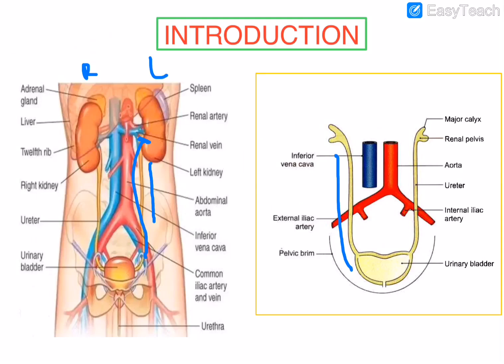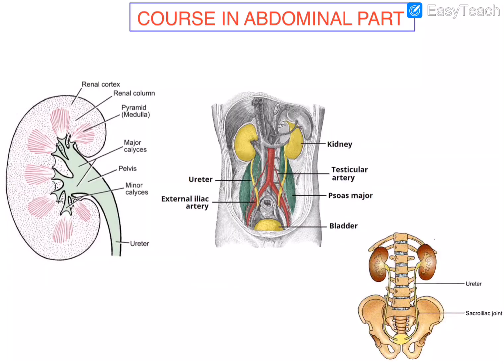The main function of the ureters is to convey or conduct urine from the kidneys to the urinary bladder. The upper half of its length, that is 5 inches, lies in the abdominal part, and the lower half, another 5 inches, lies in the true pelvis, that is the lateral pelvic wall. It measures 3 millimeters in diameter but is slightly constricted at 5 places.